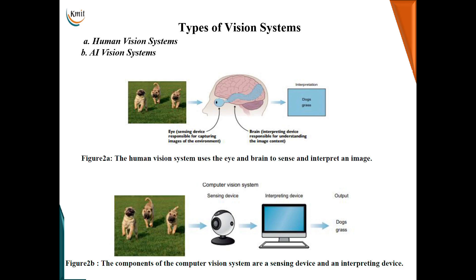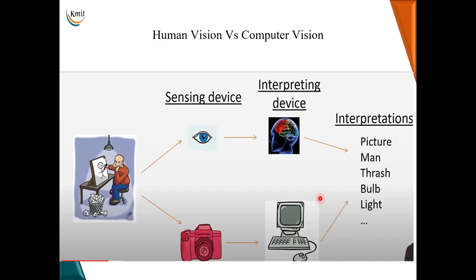Coming to the vision system, we have two different types: the human vision system and the artificial intelligence vision system. In the human vision system, given an image of three dogs and grass, the eye — the sensing device — captures the image, and the brain — the interpreting device — interprets it as dogs and grass. The same applies to the AI vision system: a camera captures the image, and an interpreting device using neural network algorithms or convolutional neural networks produces the output. This slide compares human vision and computer vision in terms of sensing and interpreting devices.